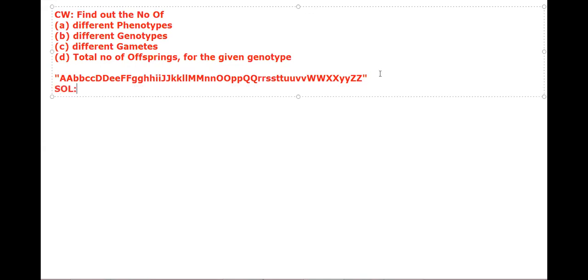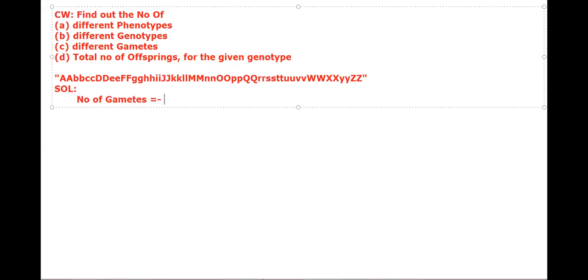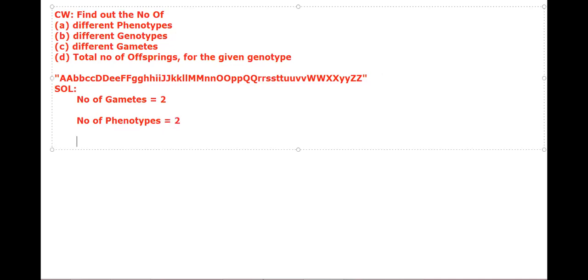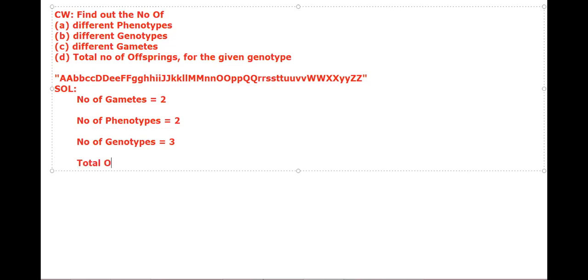We have discussed the concept that number of gametes is equal to 2 to the power n, number of phenotypes is equal to 2 to the power n, number of genotypes is equal to 3 to the power n, and total offspring equals 4 to the power n.